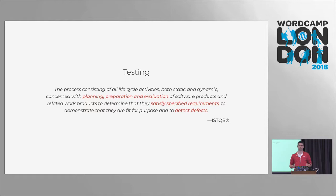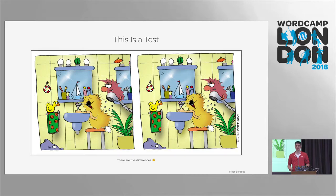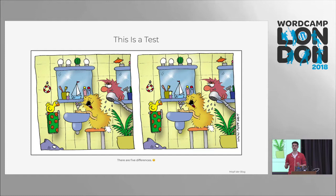The direct goal is to find defects in the software. Basically, this is a test — we have two things that should match. It doesn't matter what is the requirement and what is the product that we developed; they should match. And if they don't, there is a difference, and then our test found the defect or the difference. And if you're wondering, there are five differences here.